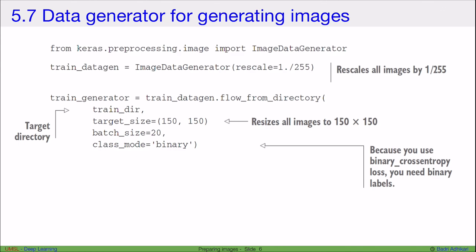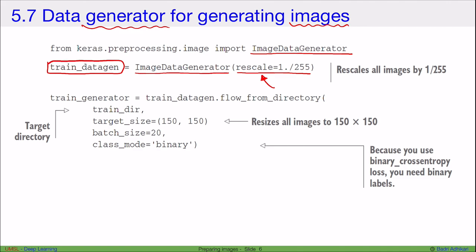We don't always need to implement our own generator. If we are working with images, Keras already has many pre-built generators for data generation. One example is ImageDataGenerator — we create one by specifying the rescaling factor (for example 1/255 to rescale pixel values up to 255). Once the generator is created, we specify how it will load data using flow_from_directory, which keeps reading from the directory and gives us the data continuously.